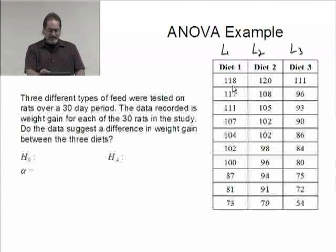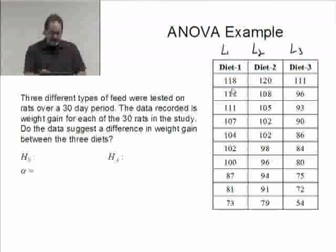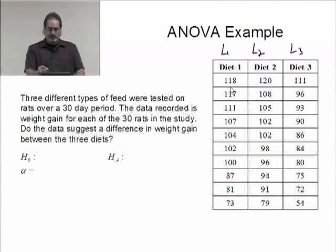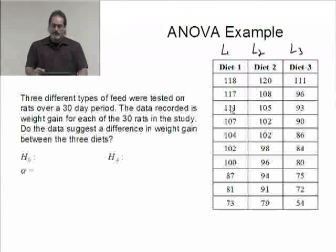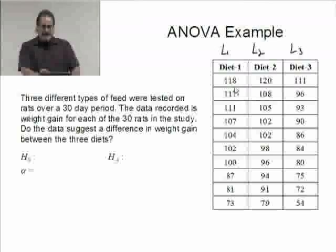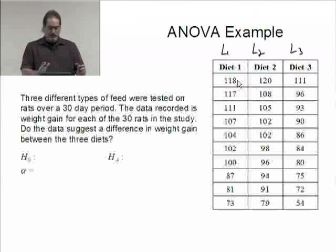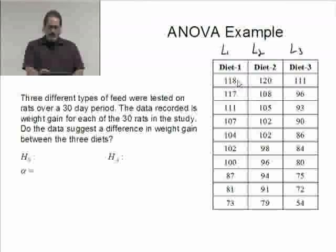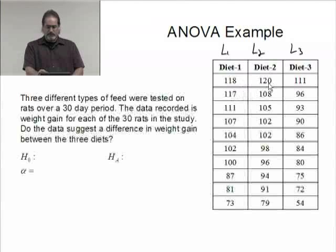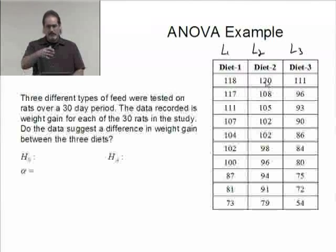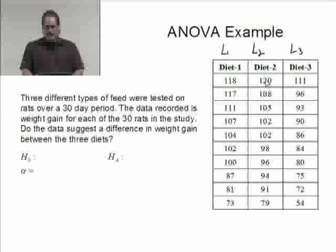The unit is not stated here, but I'm thinking this is not pounds, probably grams. This particular rat gained 118 grams or some type of reasonable units for a rat. The 120 would be this rat on this diet gained that many grams of weight.